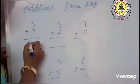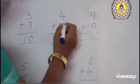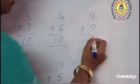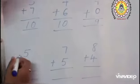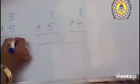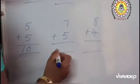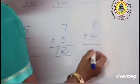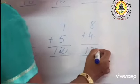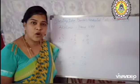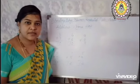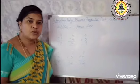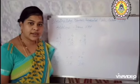3 plus 7 is equal to 10. 4 plus 6 is equal to 10. 9 plus 0 is 9. 5 plus 5 is equal to 10. 7 plus 5 is equal to 12. 8 plus 4 is equal to 12. I hope all of you wrote correct answers. I am giving 3 stars to those who wrote all correct answers children.